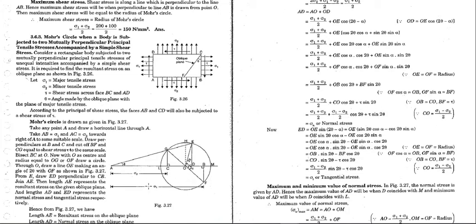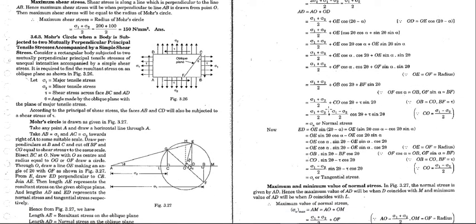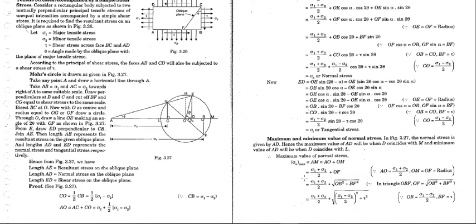In the last case — when mutually perpendicular stresses are accompanied by shear stress — again it is a Mohr's circle with σ₁ and σ₂ values, from which he derived the same formulae for tangential and normal stresses seen previously, including the equation for the minimum value of normal stress.